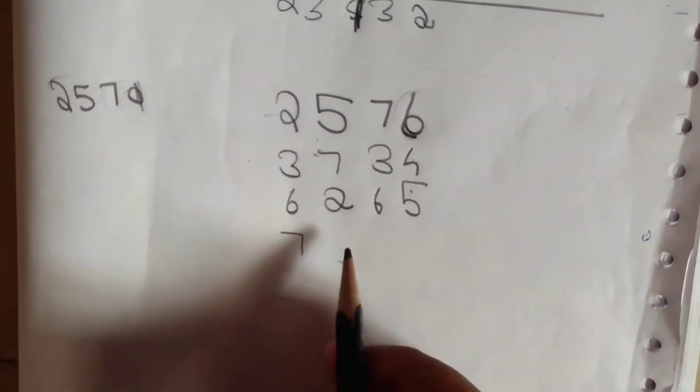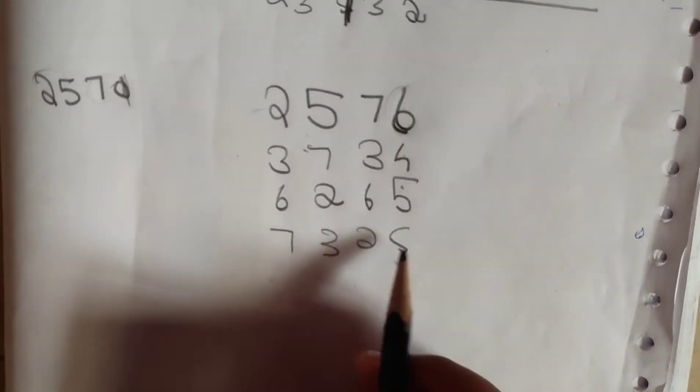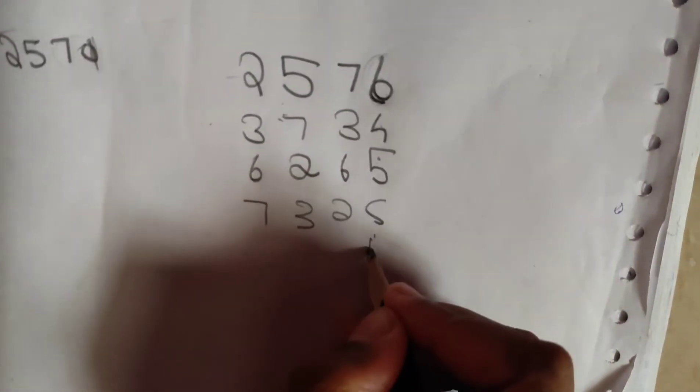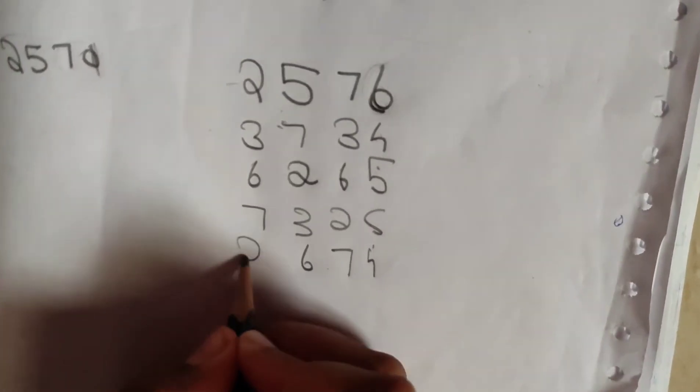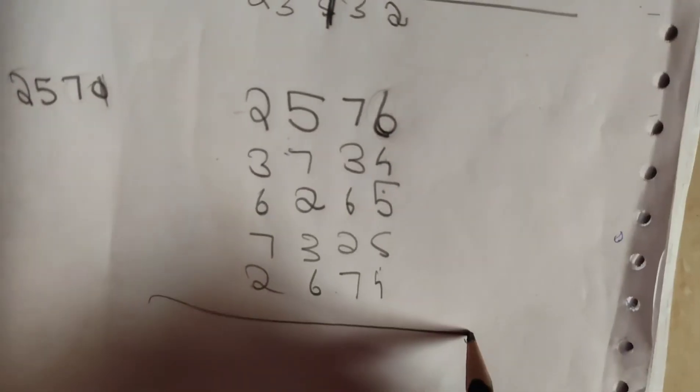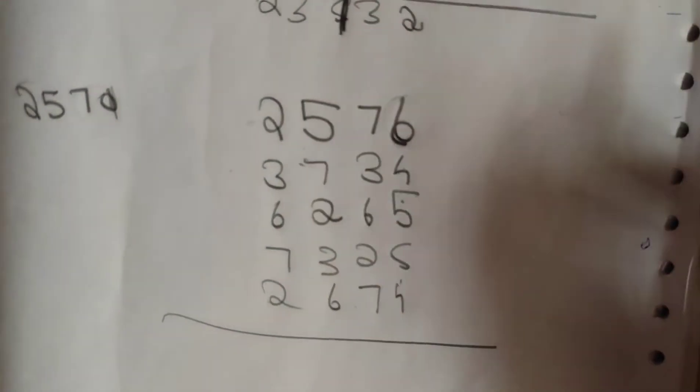Again you tell him to write a number. 7, 3, 2, 5. Again you do the same technique. 5 plus 4 is 9, 7, 6, 2. Then when you add all of them, you get that result.